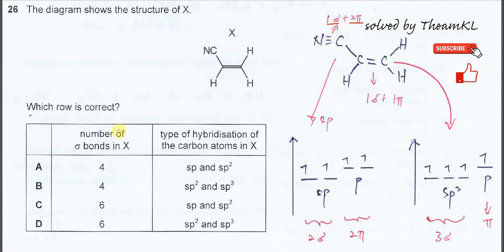We need to find the number of sigma bonds in X and the type of hybridization of carbon in X. To get the sigma bonds, it's better to use the display formula. In this structure, we know that there is one double bond and one triple bond.